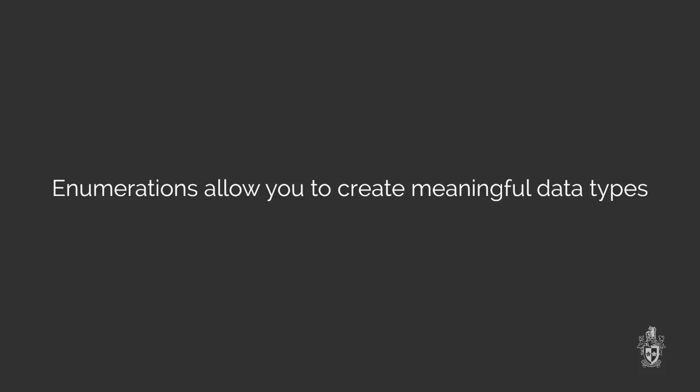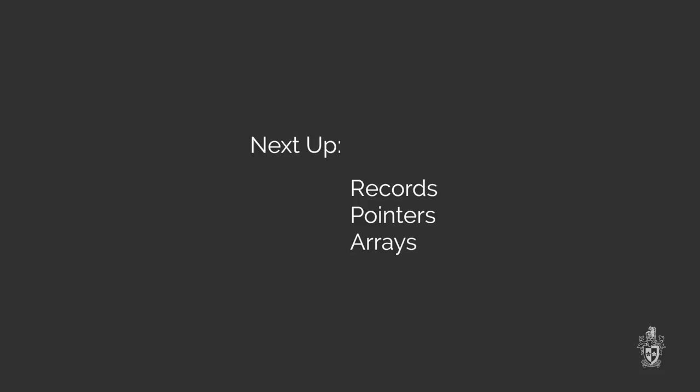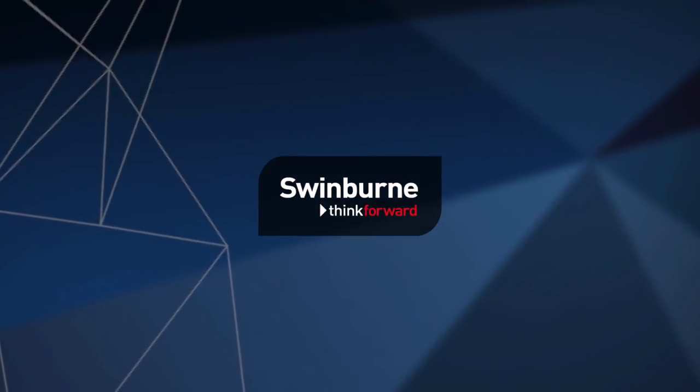That's it for enumerations. Enumerations allow us to create our own data type to represent a list of valid options, and we can then use that to declare variables where you want to store one of those values. They work particularly nicely with the case statement. Coming up next we've got a video on records — another kind of custom data type to store multiple values inside a single composite type — and also pointers, or you could move on to the next big topic which is arrays. Thank you very much for watching and we hope to catch you next time.